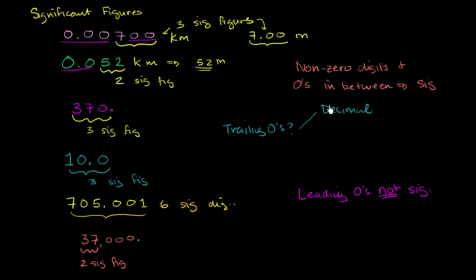So the easy way to think about it is if you have a decimal, if there's a decimal anywhere in your number, count them. If you have a decimal, count them as significant. They are significant. Count them as significant.